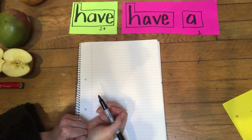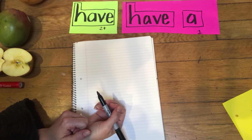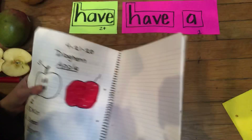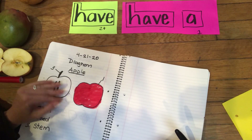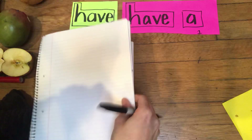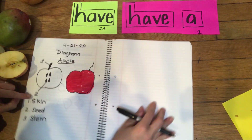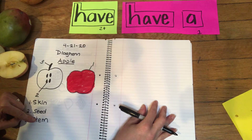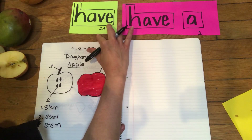Hi boys and girls. Welcome back to All About Fruits. If you remembered, yesterday we did a diagram about our fruit. And today we are going to take these words from our diagram list — skin, seed, stem — to write what they have in a sentence.